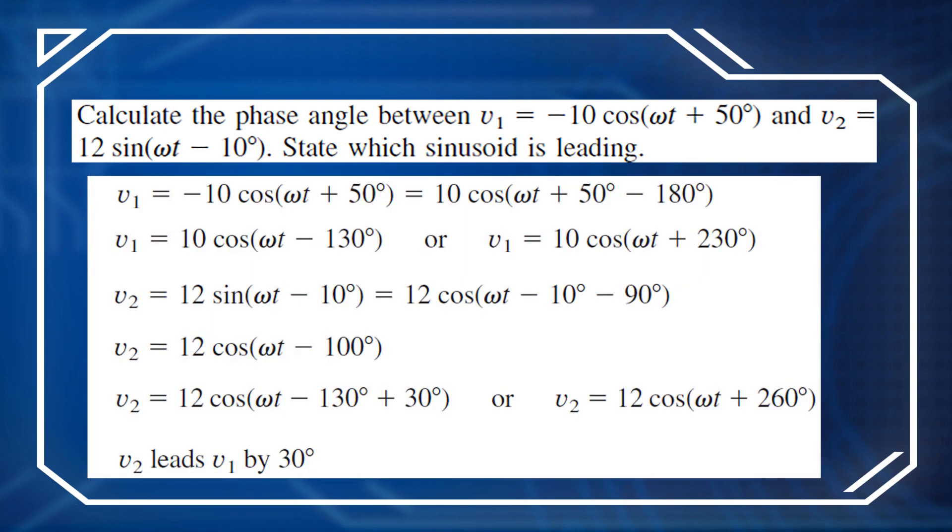So v₁ equals 10 cos(ωt + 50° - 180°). So v₁ equals 10 cos(ωt - 130°), or v₁ equals 10 cos(ωt + 230°).